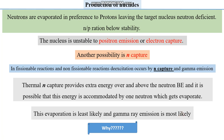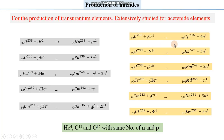Neutrons are evaporated in these reactions preferably compared to protons. The evaporation of neutrons is discussed in these reactions, while in rare reactions the evaporation of protons was observed. This means the evaporation of neutrons is the preferable process compared to the evaporation of protons.